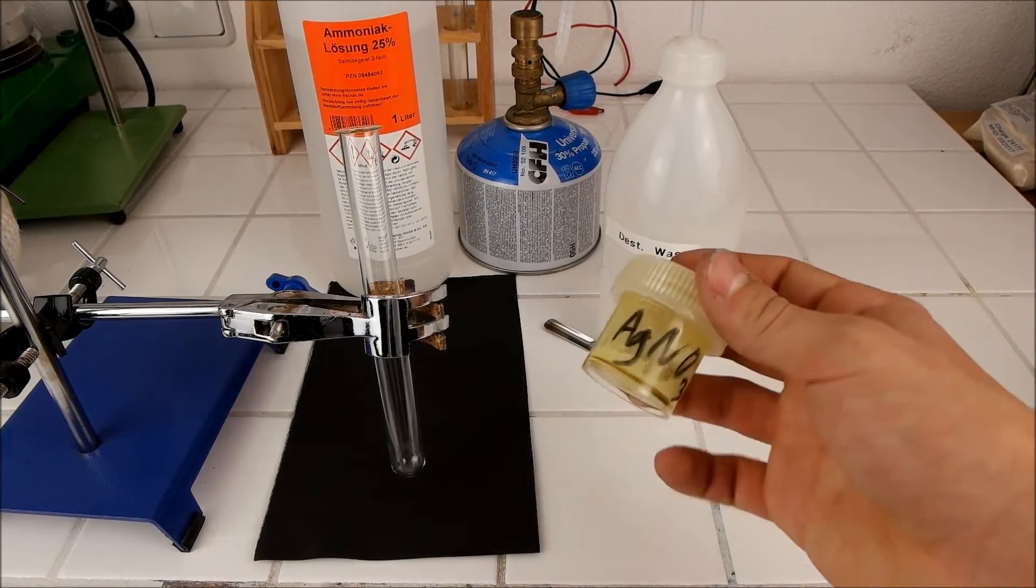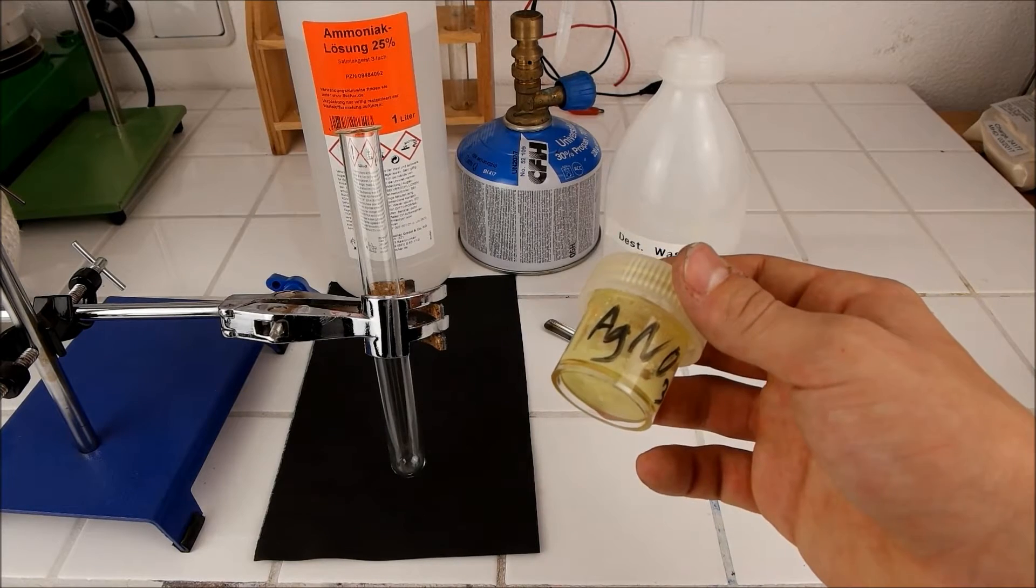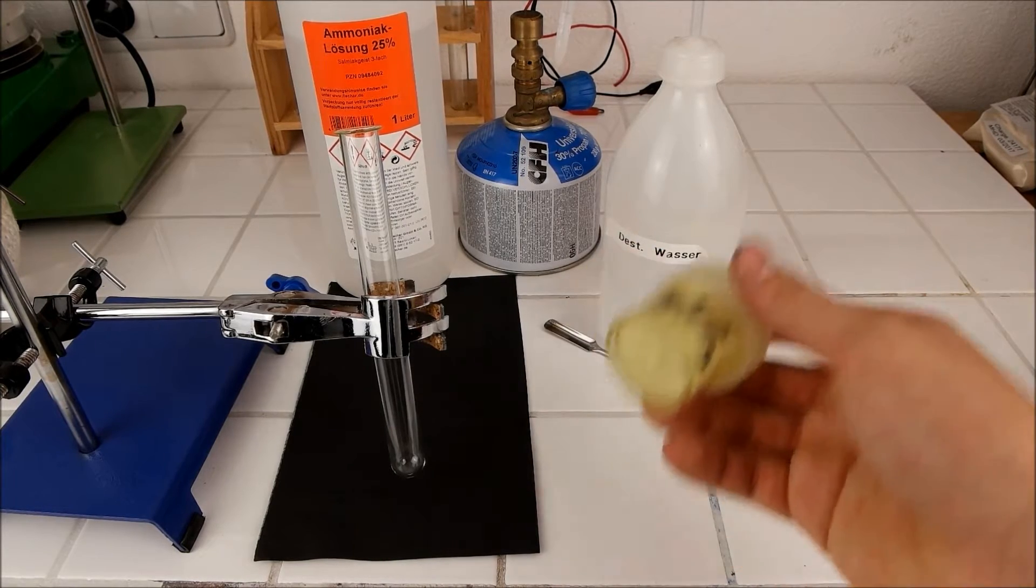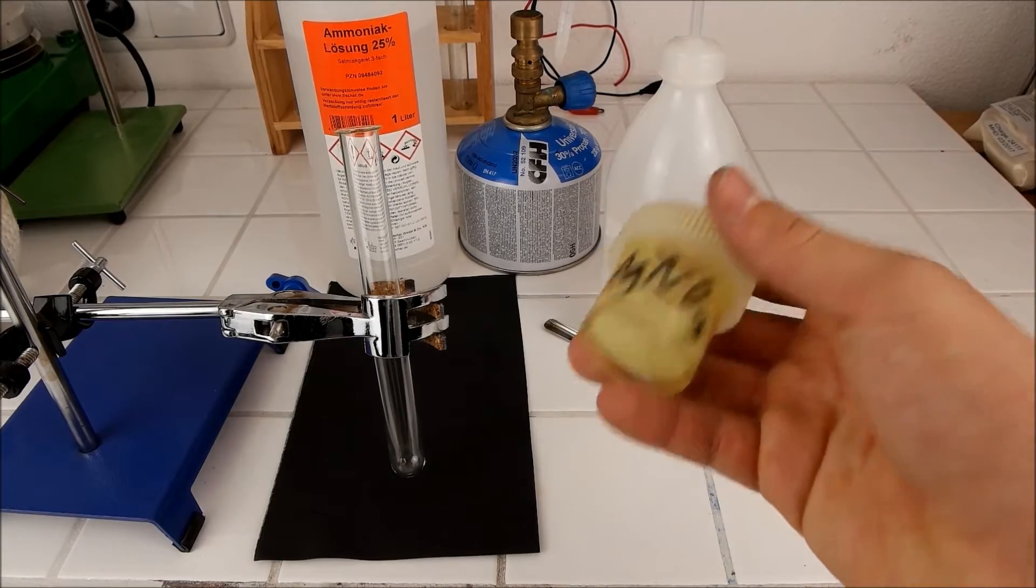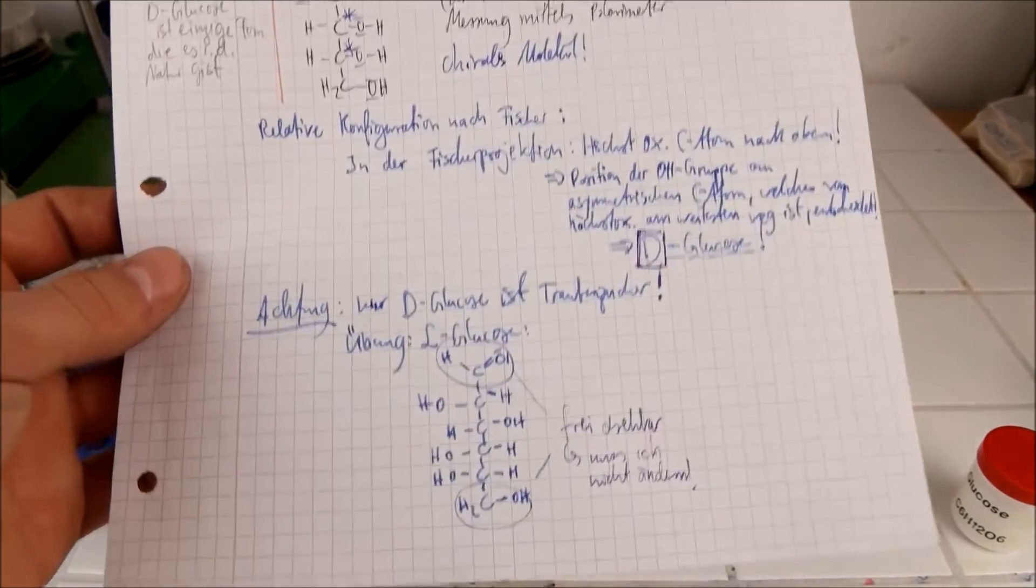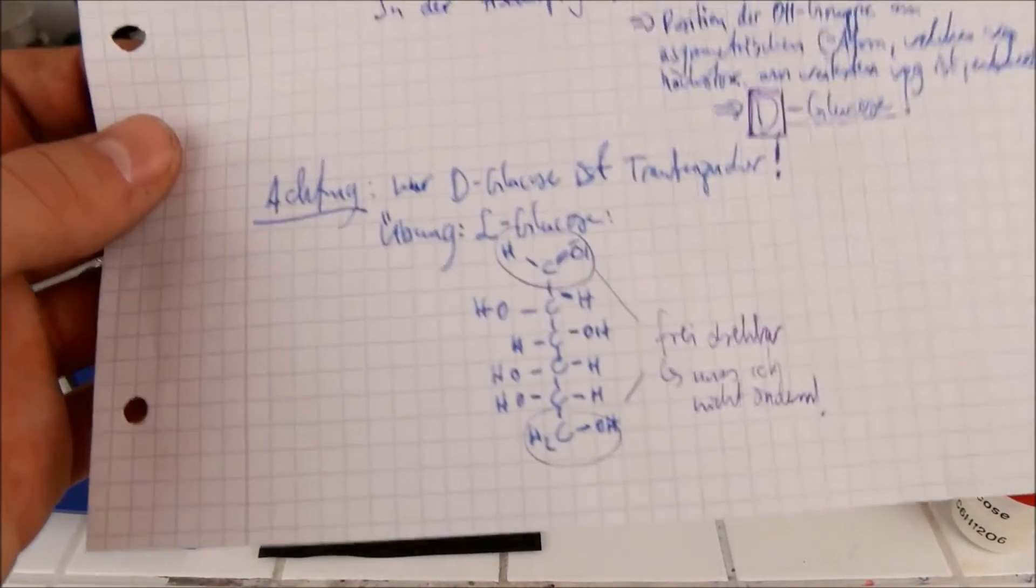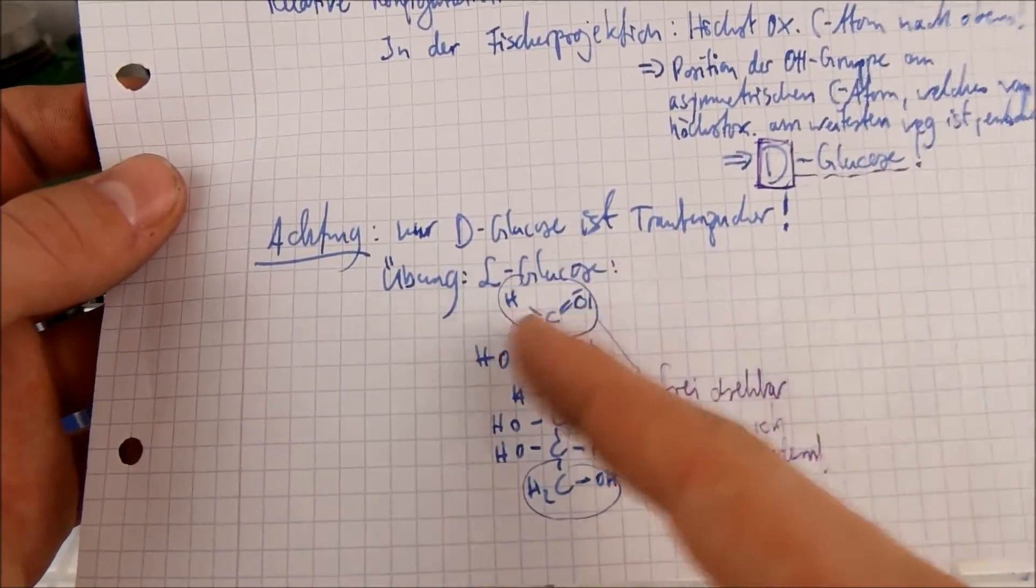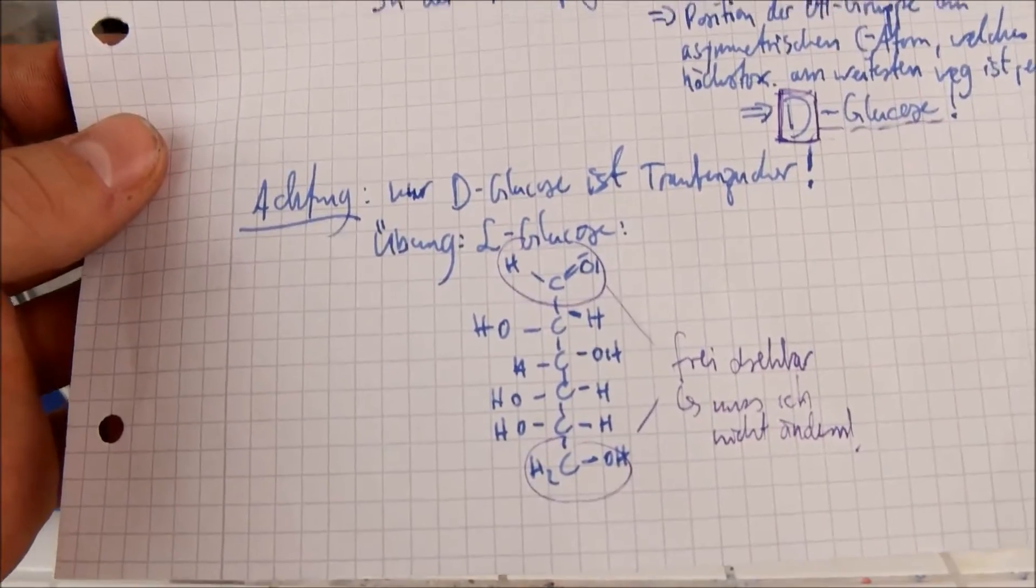And the silver nitrate gets reduced to make elemental silver. When we talked about sugars in high school, we did the same experiment. So, that's just a glucose molecule and here is an aldehyde group that can be oxidized.